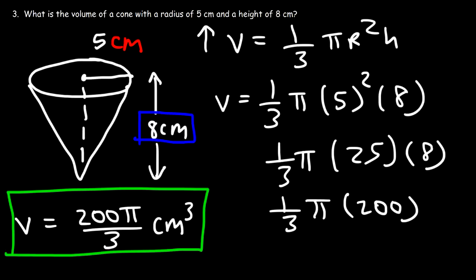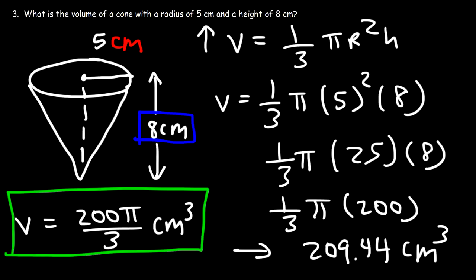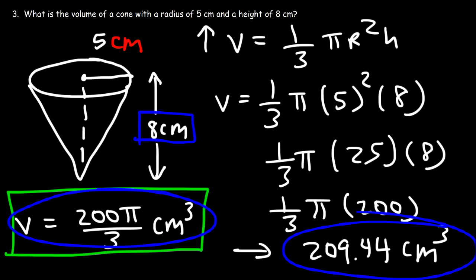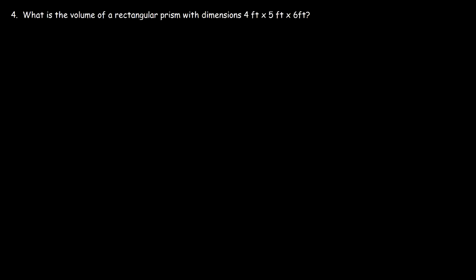Converting to a decimal: 200 pi divided by 3 is approximately 209.44 cubic centimeters. You can report your answer in exact form or as a decimal. Problem four: what is the volume of a rectangular prism with dimensions 4 feet by 5 feet by 6 feet?